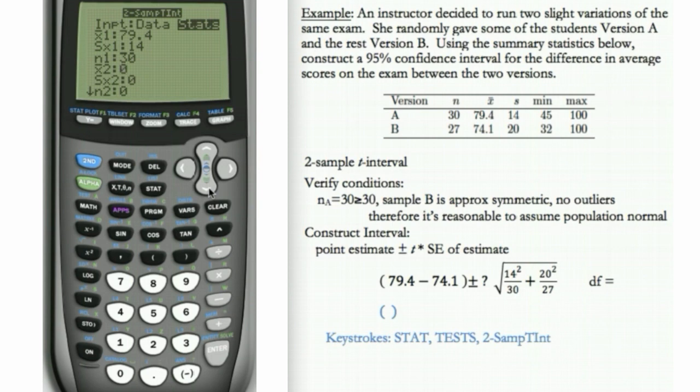X bar 2, corresponding to the B version, is 74.1. Its standard deviation is 20. And its N is 27.